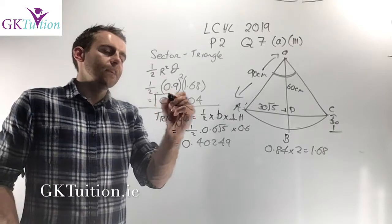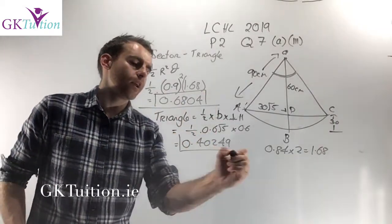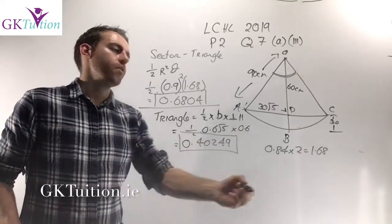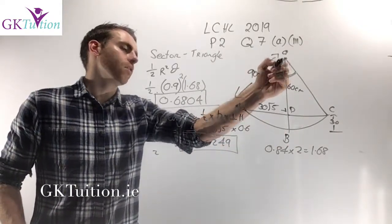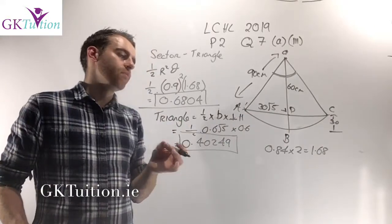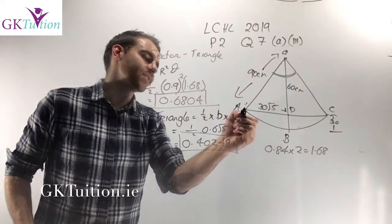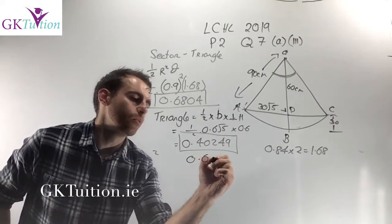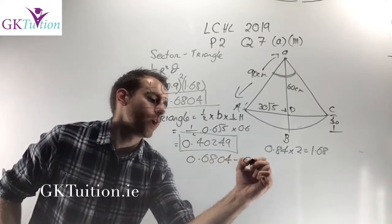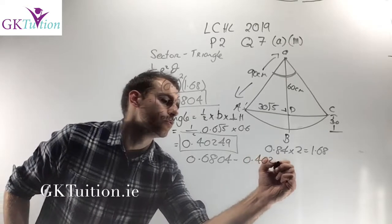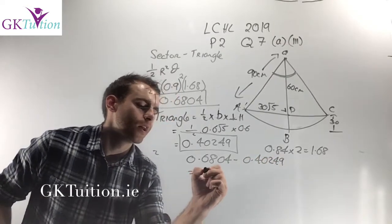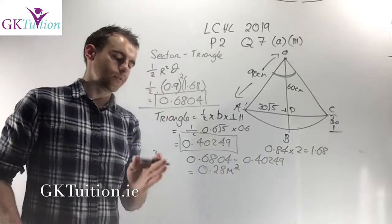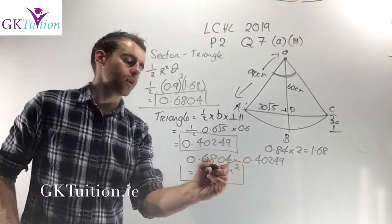Subtracting the two areas: 0.6804 minus 0.40249 gives a final answer of 0.28 metres squared for the area of segment ABC. That's where you get full marks for this part of the question.